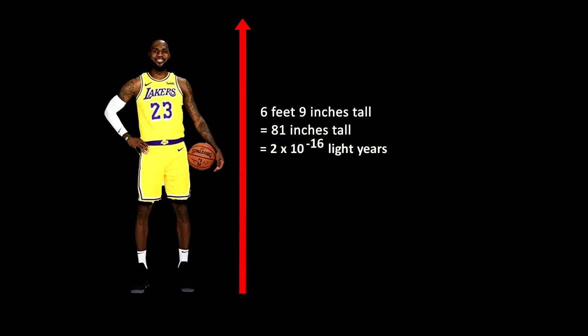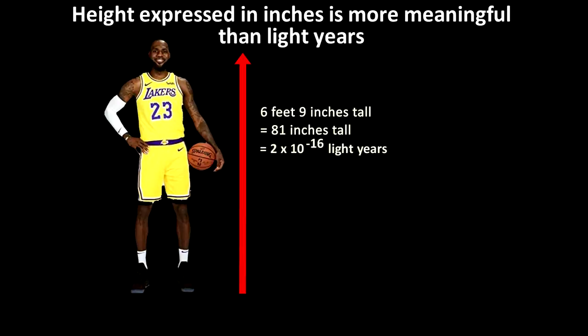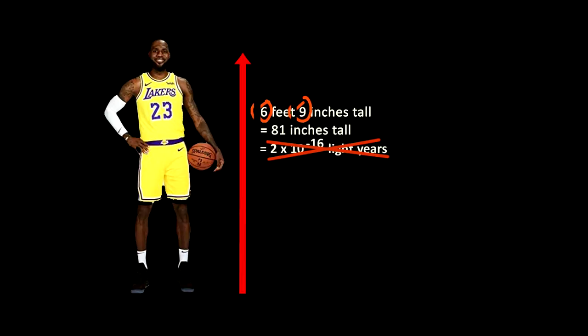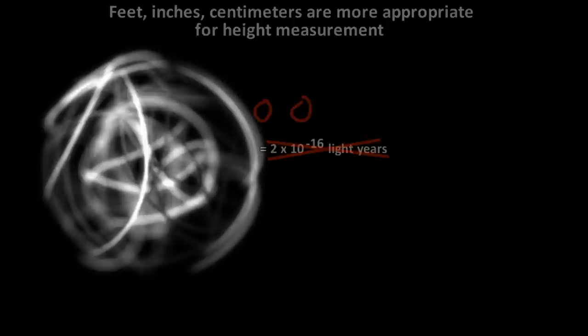LeBron is 81 inches tall. The fact is that if he was four inches shorter or taller, a difference of five percent, he would still be able to play basketball, and he would probably still be one of the best. So his height expressed in inches instead of light years is a better way to look at the fine-tuning issue. So when you look at the constants expressed in terms that make more sense, then the fine-tuning argument doesn't seem that impressive.